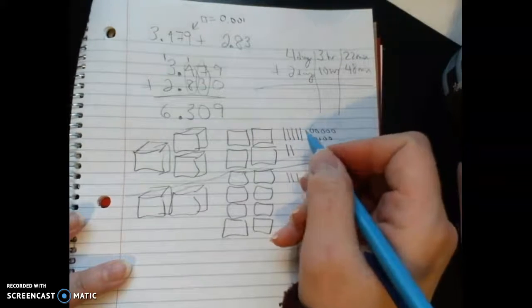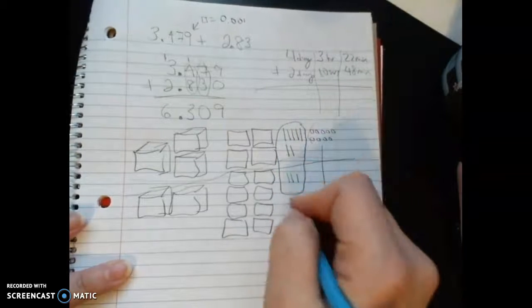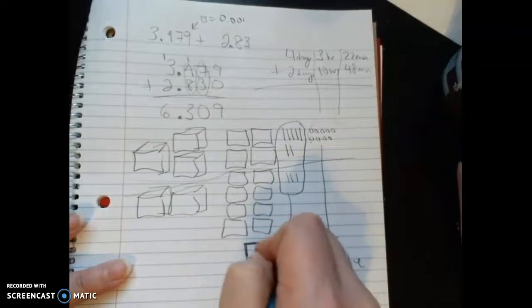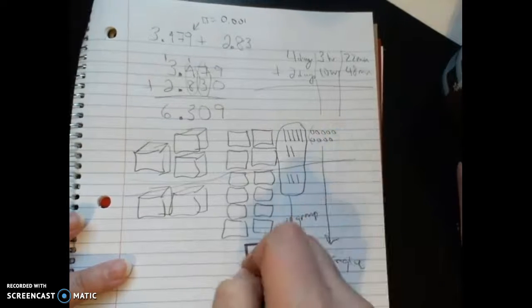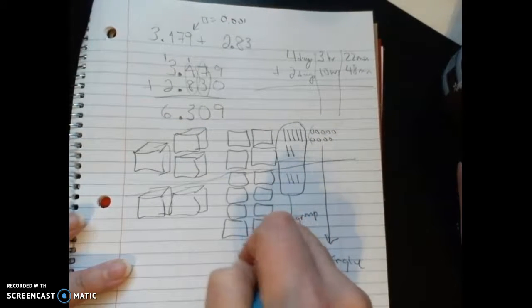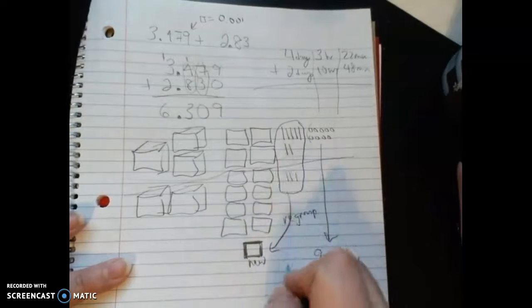When I look at the longs, I have 5, 6, 7, 8, 9, 10, 11, 12, 13, 14, 15 tenths, so that's more than enough to regroup into a new one. Notice there's no longs left, so I have zero longs left.